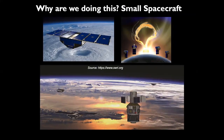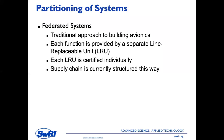Here are some examples of more recent small spacecraft — there's a picture of the Cygnus spacecraft and a picture of the Punch Constellation, which is in work right now. We're looking at partition systems to be able to make use of the high-performance processors that are now available to us.